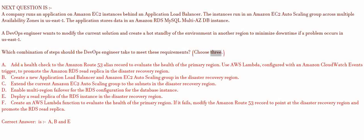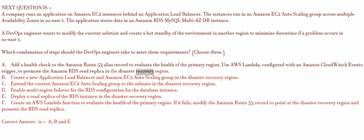A. Add a health check to the Amazon Route 53 alias record to evaluate the health of the primary region. B. Use AWS Lambda, configured with an Amazon CloudWatch Events trigger, to promote the Amazon RDS read replica in the disaster recovery region.